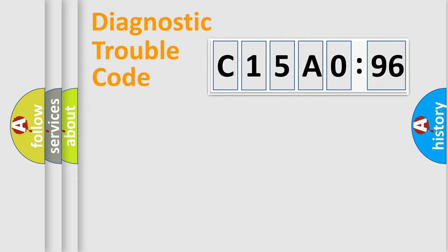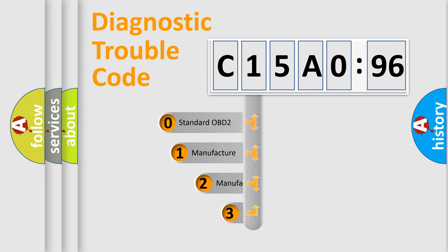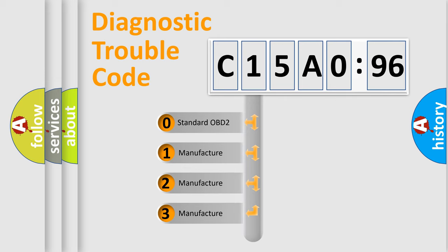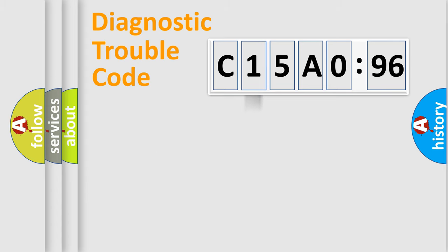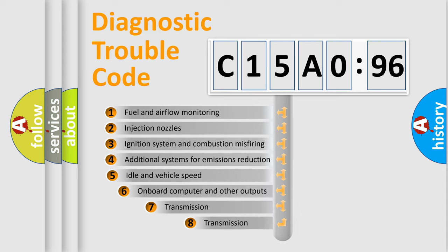Powertrain, Body, Chassis, and Network. This distribution is defined in the first character code. If the second character is expressed as zero, it is a standardized error. In the case of numbers 1, 2, or 3, it is a more prestigious expression of the car-specific error.